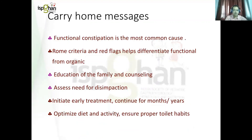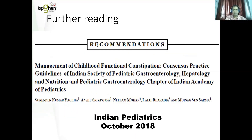Key take-home messages: functional constipation is the most common cause of constipation in children. Rome criteria and red flags help differentiate functional from organic constipation. Education of the family and counseling is very important to ensure compliance and treatment success. We need to assess for impaction and do disimpaction before starting maintenance. Treatment needs to start early and continue for months to years, optimizing diet, activity, and toilet training before gradually tapering and weaning off. I recommend the ISPGHAN Guideline on Functional Childhood Constipation published in Indian Pediatrics in October 2018, which gives detailed information on how to manage these children. Thank you.